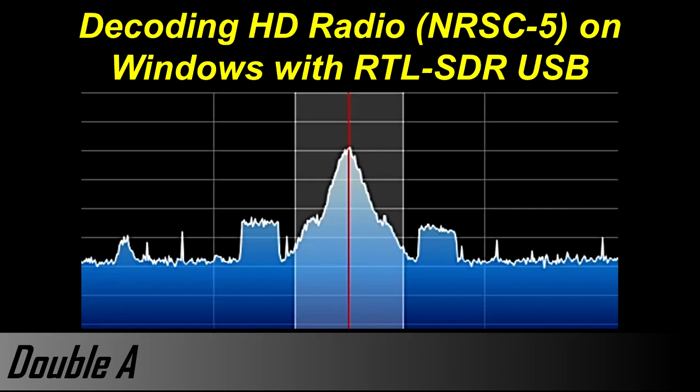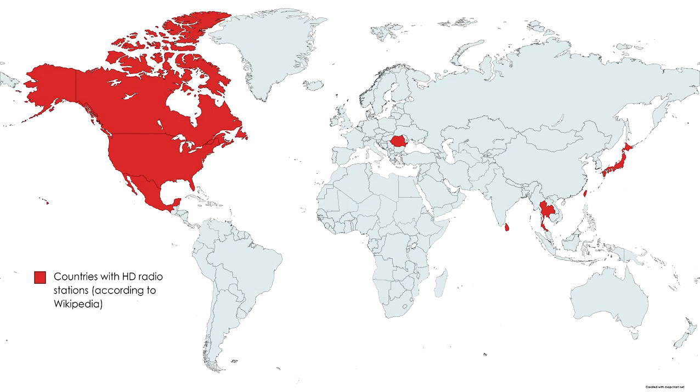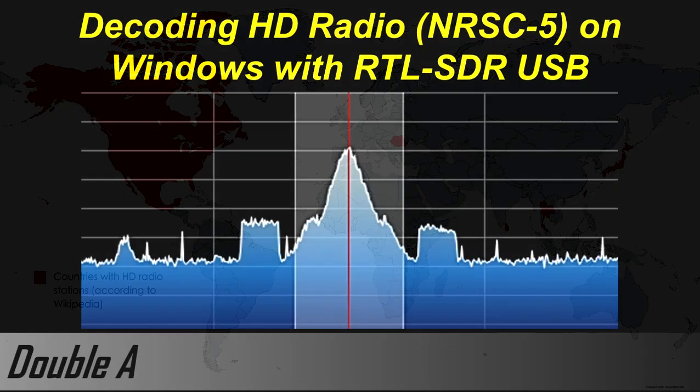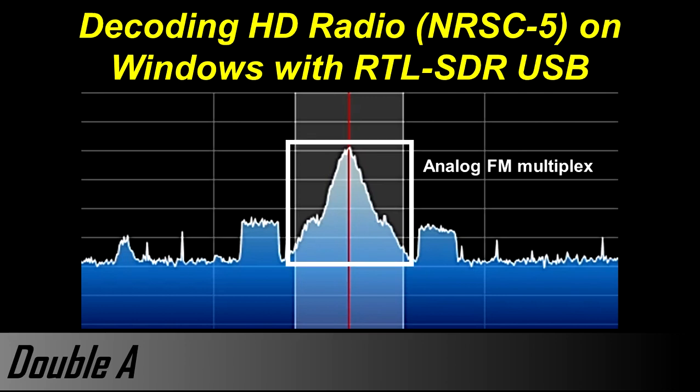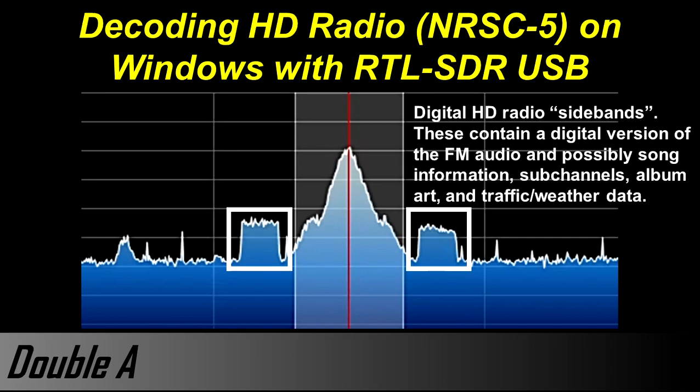HD radio is the name for the digital audio broadcasting standard used mainly in the United States and a few other countries. The format uses OFDM carriers placed in the FM band. If an FM station decides to transmit digital, its digital signal is located adjacent to its analog signal on the spectrum.